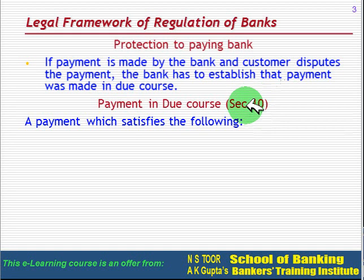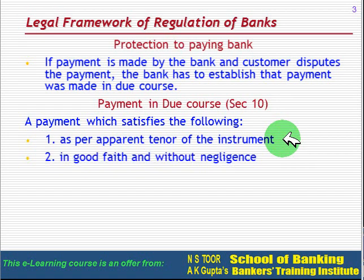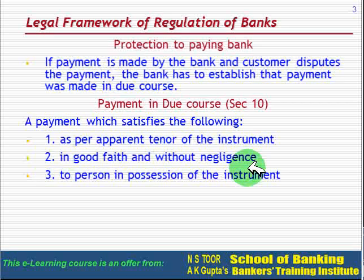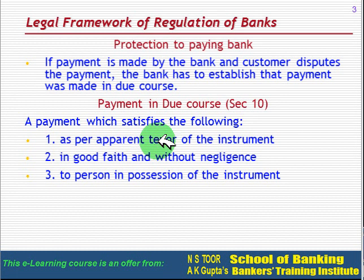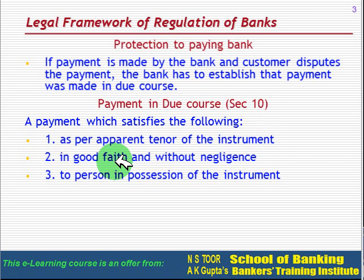Under Section 10 of the NI Act, a payment is a payment in due course if the following conditions are satisfied: First, the payment is as per the apparent tenor of the instrument — meaning as per the instructions which appear on the instrument. Second, the payment is made in good faith and without negligence. Third, the payment is made to the person who was in possession of the instrument. Good faith means that at the time payment was made, there was no circumstance which put the bank in doubt that payment could not be made to that person.